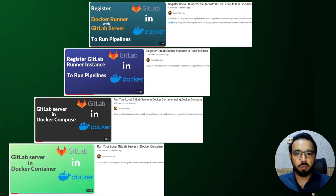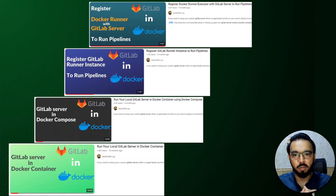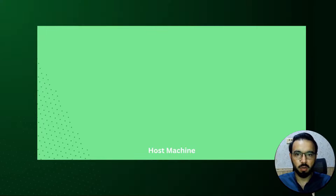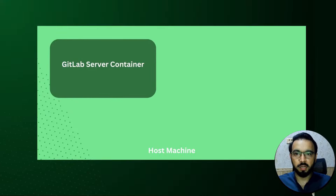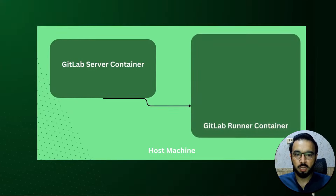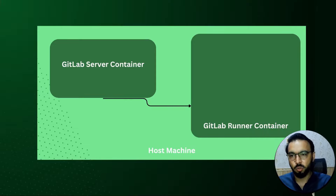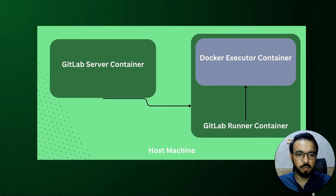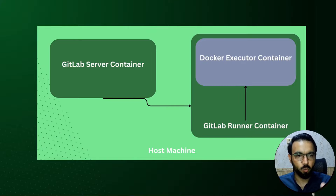Let's revise the overall architecture — how the GitLab server, GitLab runner, and Docker executor were communicating and how they were structured inside Docker containers. On the host machine running the Docker engine, we had a GitLab server container and a GitLab runner container, both running through a docker-compose file. Inside the GitLab runner, we had the Docker executor container — a container within a container.